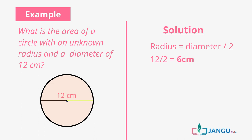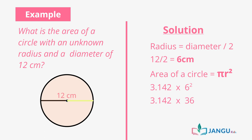Since we know the radius is 6 centimeters, we apply the formula pi r squared to find the area of the circle. Therefore, we have 3.142 times 6 squared, and when calculated, that is equal to 113.1 centimeters squared. Therefore, the area of a circle with an unknown radius and a diameter of 12 centimeters is 113.1 centimeters squared.